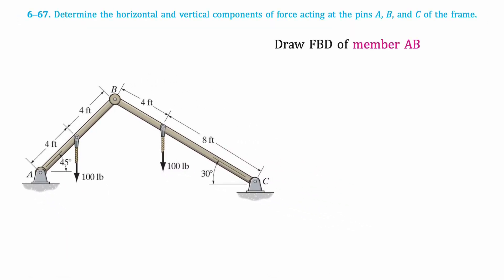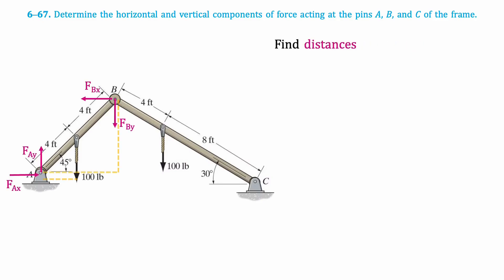First we'll draw the free body diagram of member AB. At both A and B there is a pin, so they'll both have X and Y components. Next we'll find the base and height of the triangle formed by member AB. The base of the triangle can be found using the given angle and length of member AB, which results in 5.66 feet. The height of the triangle is found the same way and equals 5.66 feet.